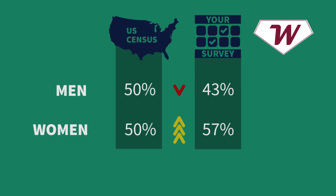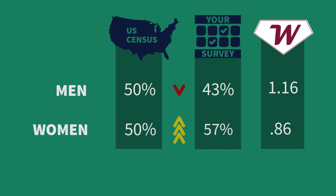This weight variable will have higher values for undersampled groups, like men in our example, and it will have lower values for oversampled groups, like women in our example. Our new variable does two things: it deflates the statistical importance of over-represented groups, and it inflates the importance of under-represented groups.